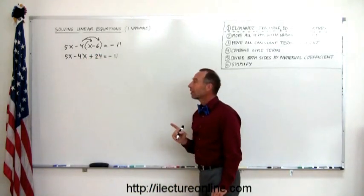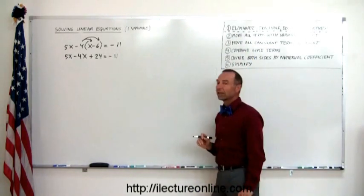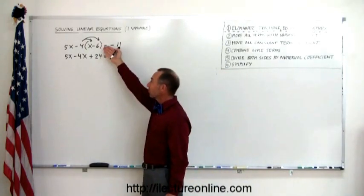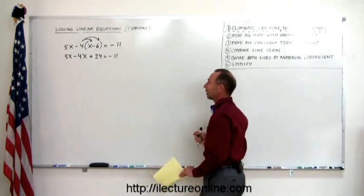Now we have an equation, just like the examples we saw before, with step number 1 no longer necessary. Step number 1 is simply there to turn something that has fractions, decimals, or parentheses into something that has none of those. And then you just follow the next 5 steps just like you did before.